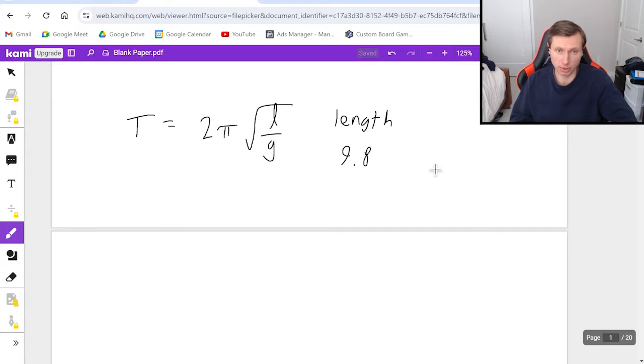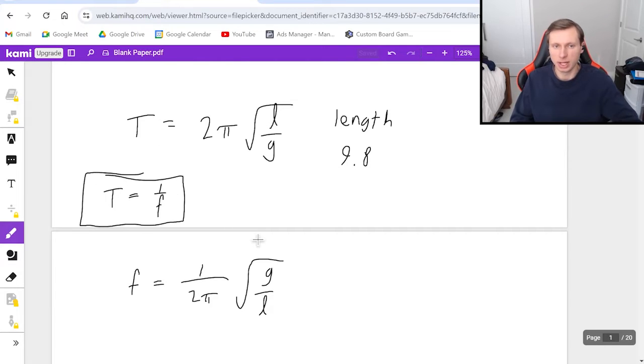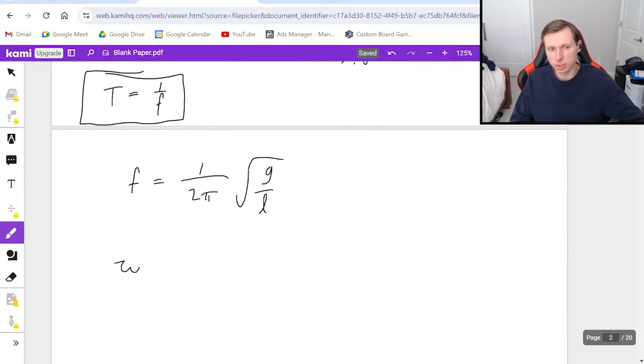And since we have period T, and we have the equation period equals one over frequency, you can actually solve this for frequency, and you get this new equation, F equals one over two pi root G over L. You'd use this equation if you ever want to solve for frequency, or you can find period and then just take the reciprocal, and you'll get your answer that way as well. And then there's one more equation I need to show you. It's if we want to solve for omega, angular frequency. It's root G over L like this.